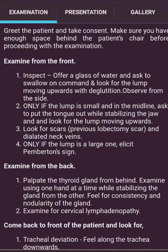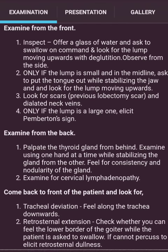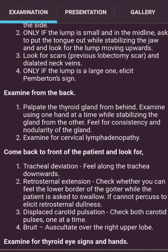Observe from the side — only if the lump is small and in the midline, ask the patient to put out their tongue while stabilizing the jaw, and look for the lump moving upwards (to differentiate thyroglossal cyst). Look for scars from previous lobectomy and dilated neck veins. If the lump is large, elicit Pemberton's sign.